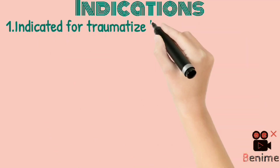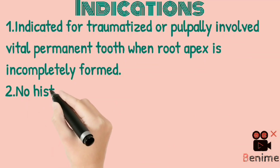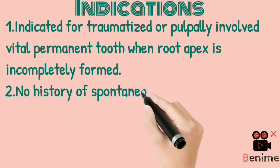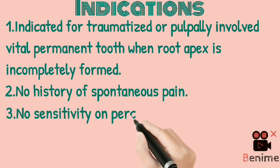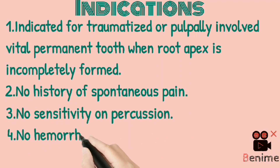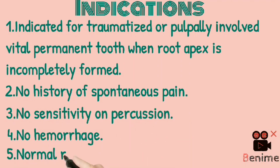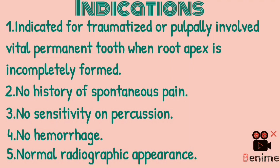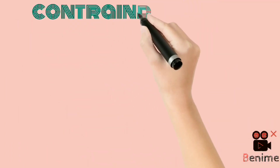What are the indications of this procedure? First indication: it is indicated for a traumatized or pulpally involved vital permanent tooth when the root apex is incompletely formed. Next: no history of spontaneous pain, no sensitivity on percussion, no hemorrhage, and normal radiographic appearance.